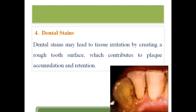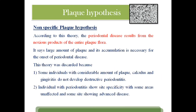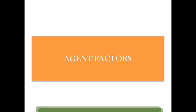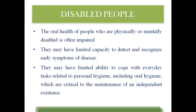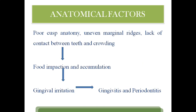So that's all about periodontal disease epidemiology. Just like dental caries, we have agent, host, and environmental factors. The main focus is the plaque hypotheses — non-specific, specific, and ecological — and the various contributing factors. The next video will explain prevention, specifically plaque control measures, both mechanical and chemical. Thank you.